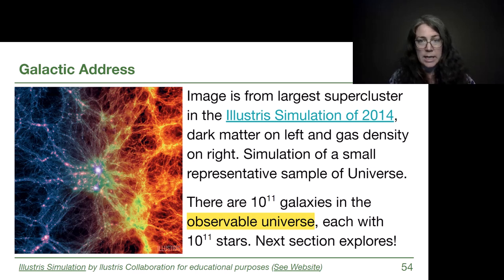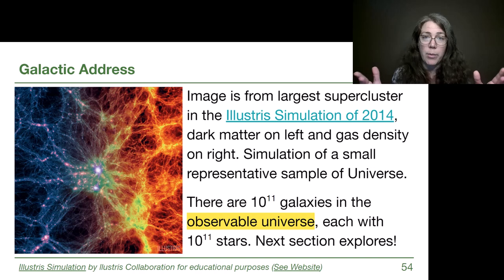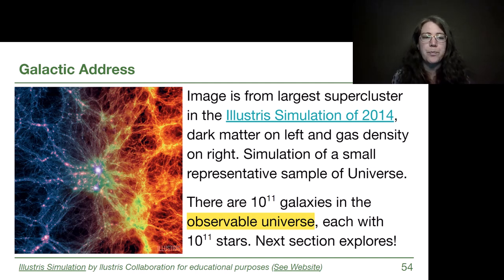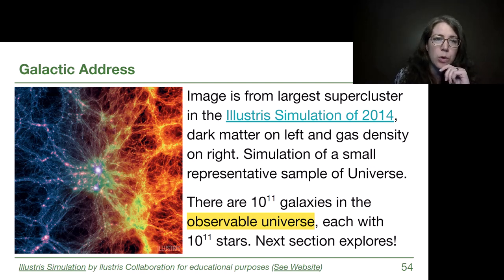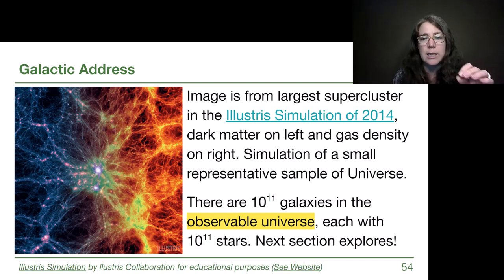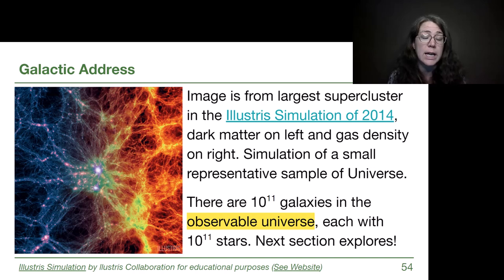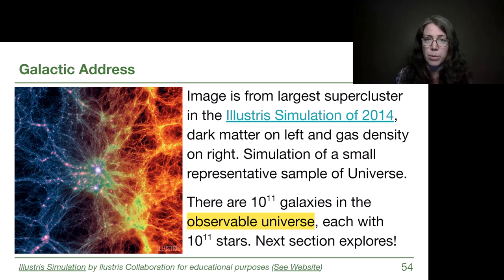We'll end with a screenshot from a large computer simulation from 2014. The key thing about computer simulations for large-scale structure is they are not trying to imitate the exact universe — they are trying to give us a statistical understanding of what kind of structure forms. This isn't trying to be the Laniakea supercluster; it shows the type of structure that formed naturally out of starting conditions and physics equations put into the system. Dark matter is shown on the left, color-coded in purple and blue, and gas density is shown on the right, color-coded in yellows and oranges.